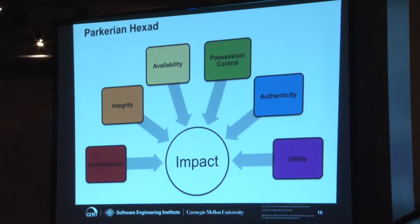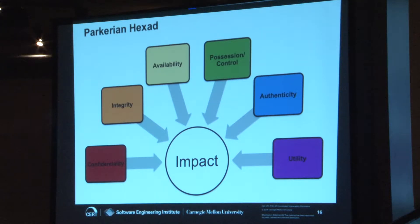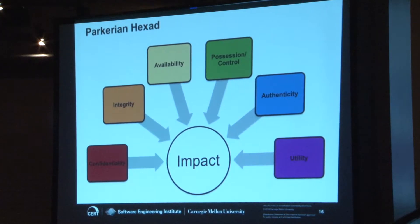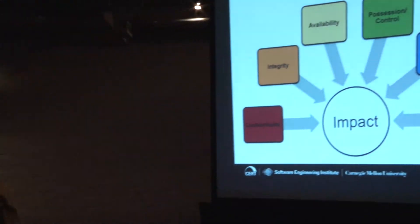Folks are familiar with CIA — confidentiality, integrity, availability. There's a guy named Don Parker who adds three more to this — the Parkerian Hexad. It thinks about some other effects that might play into impact or severity. Possession — I've stolen the laptop, I may not have taken anything off it yet, it might be encrypted, but I don't have the laptop anymore. Utility — I can't use something I don't have in my hands. Authenticity — I have to keep reading why that's not the same as integrity. The idea being you don't have to be stuck with CIA if that's not sufficient for your needs.